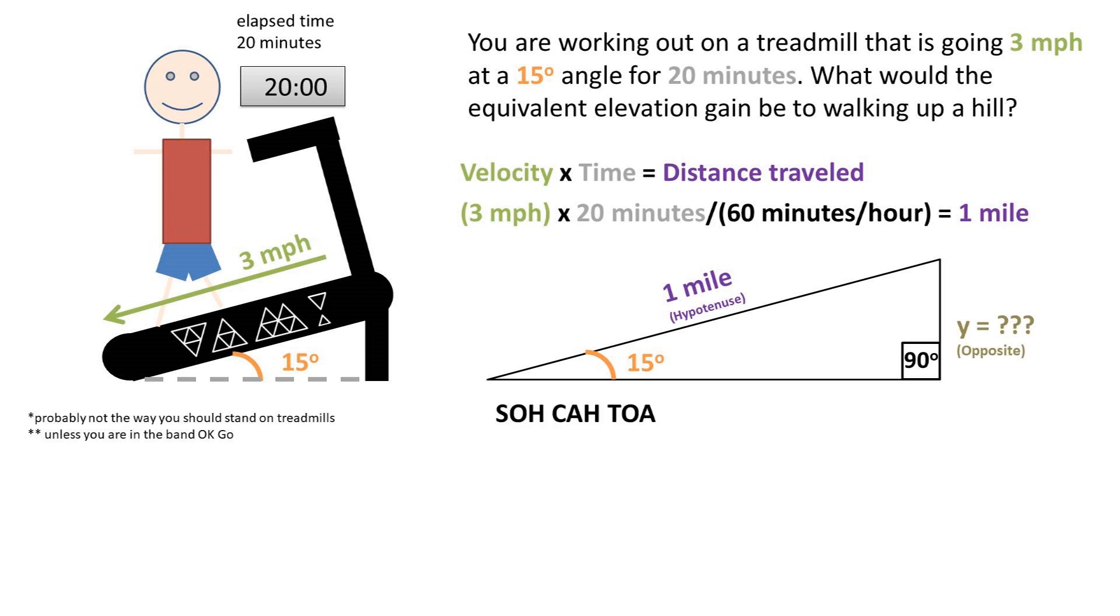Recall the property of right triangles, SOH CAH TOA. We are dealing with the side length opposite and the hypotenuse, so we'll be using the SOH portion, which is the sine of the angle is equal to the opposite side length over the hypotenuse. This is stating for a given angle, the ratio of the opposite side length over the hypotenuse will always be the same.